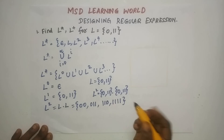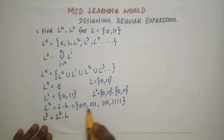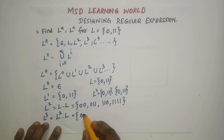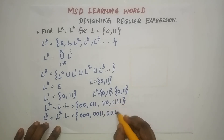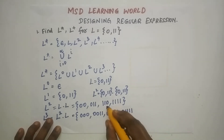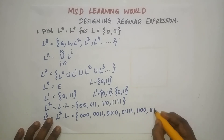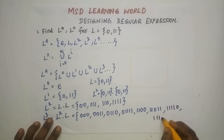What is L³? L³ is nothing but L² concatenated with L. So the same language concatenated with the above, giving strings like: 000, 0011, 0110, 01111, 1100, 11011, 11110, and 111111. Likewise, you can keep finding all occurrences of the language.